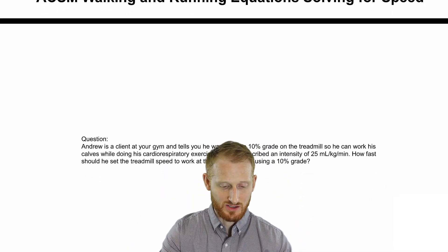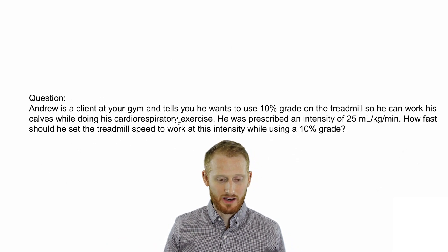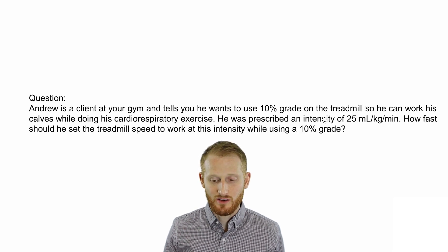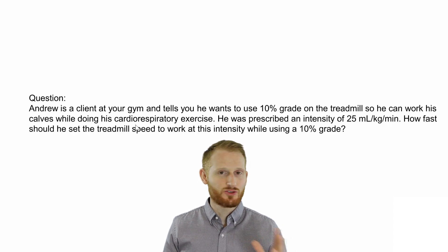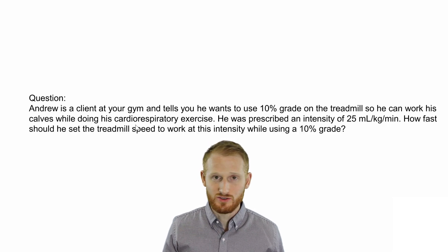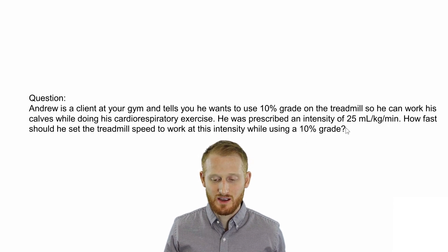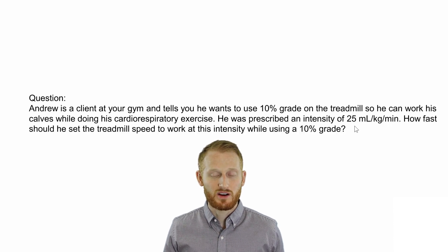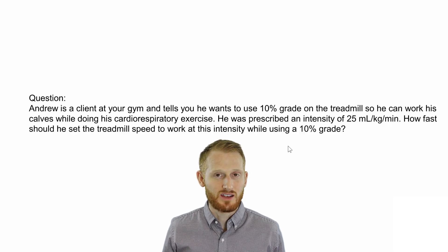Let's go ahead and get started. We're going to use a question to help us frame the situation. We have Andrew, he's a client at your gym. He tells you he wants to use 10% grade on the treadmill so that he can work his calves while doing his cardiorespiratory exercise. Assuming he's healthy enough to do that, he was prescribed an exercise intensity equivalent to 25 milliliters of oxygen per kilogram of body mass per minute. He wants to know how fast he should set the treadmill speed in order to work at this intensity while using a 10% grade.